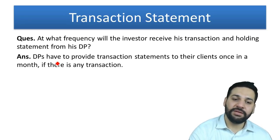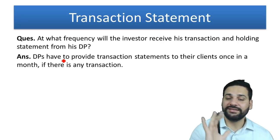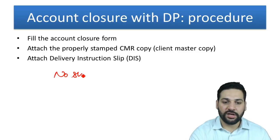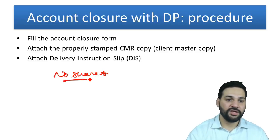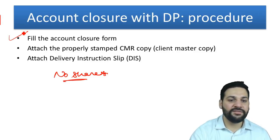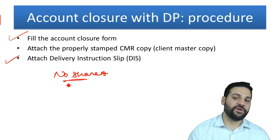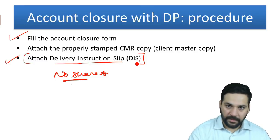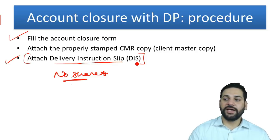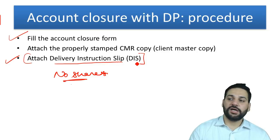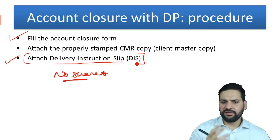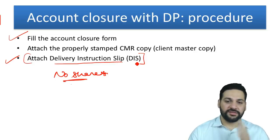Transaction statement: every month it is mandatory for the DP to send you a transaction statement. For account closure, if there are no shares in your account, you can fill an account closure form and submit the Delivery Instruction Slip. A Delivery Instruction Slip is similar to a checkbook - just as a bank holds your money, a DP holds your shares and sometimes mutual funds. Delivery instruction books for DPs are like checkbooks for banks.